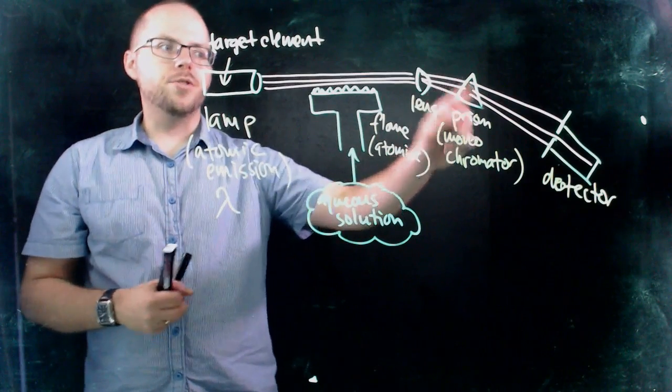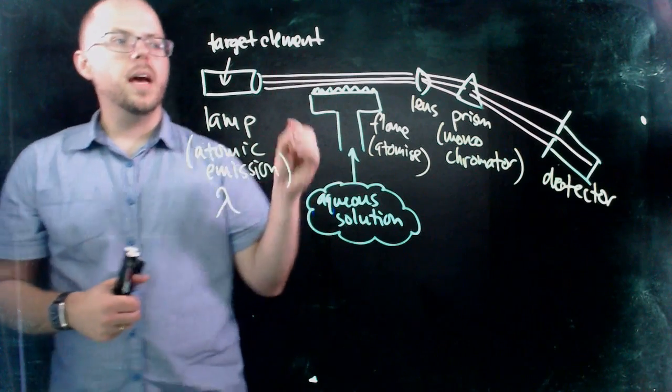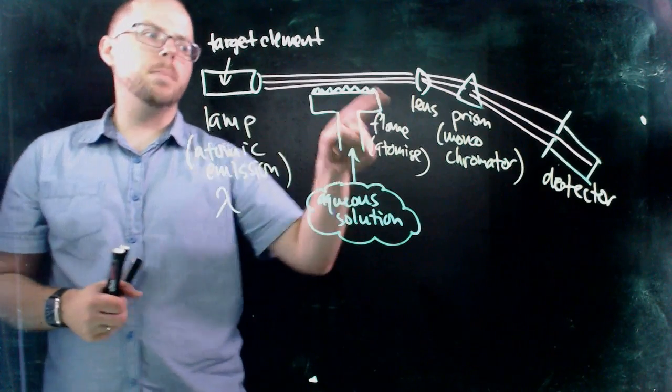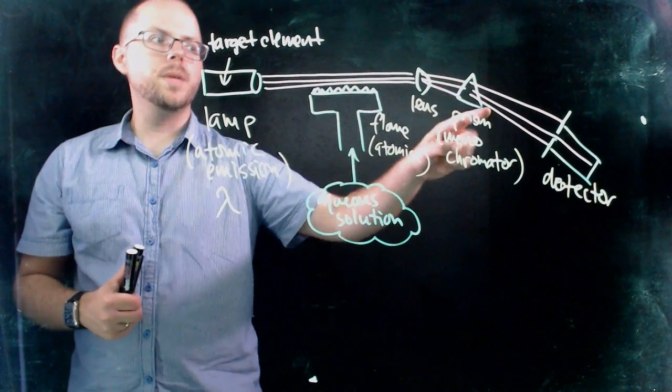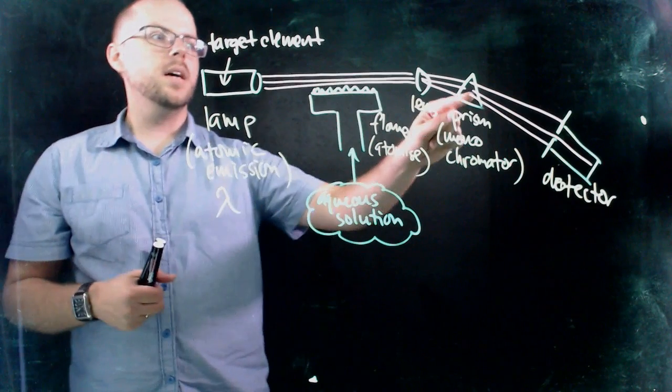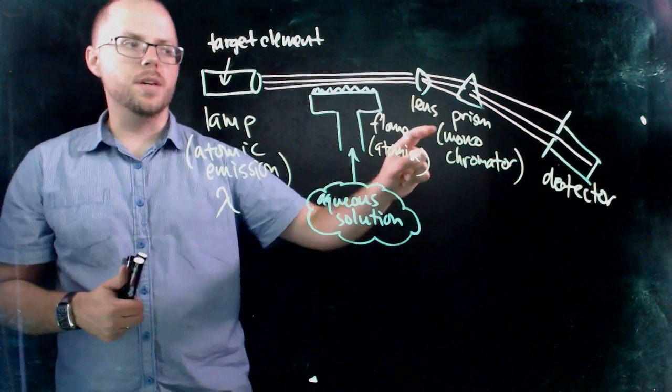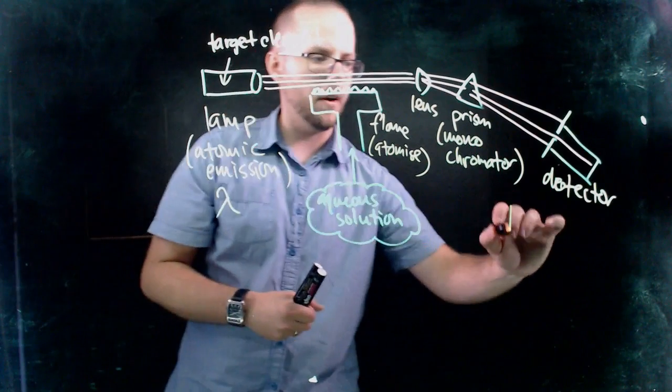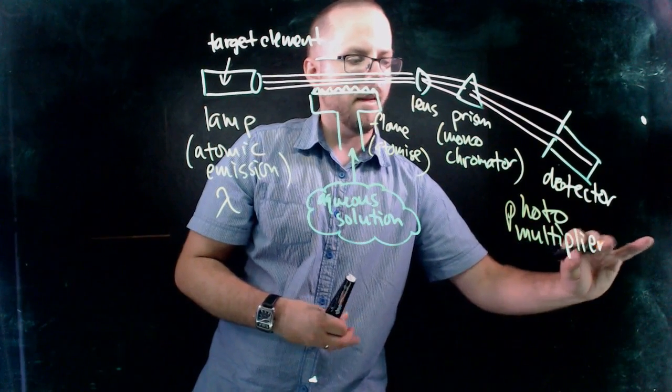So the idea is that we have this triangular prism that's able to be adjusted, its angle, its position is able to be tweaked in order that only a very specific wavelength of light will be refracted enough to pass to the detector. So you notice that over here, so we've got the lens and then these wavelengths pass to the prism, but you notice that these three representative rays of light, that only one of them actually passes through this gap in the detector, or it's called a photomultiplier tube.